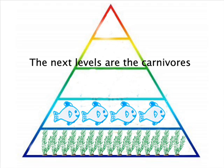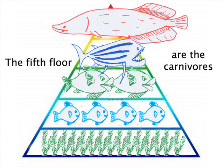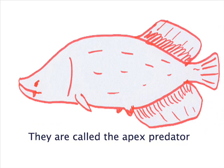The next levels are the carnivores — the third floor, fourth floor, and fifth floor are the carnivores. The end of the food chain is the carnivores, and they are called the apex predator.